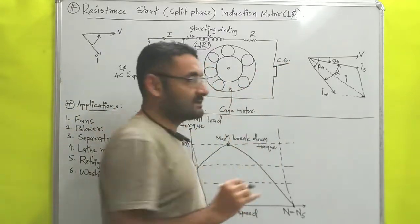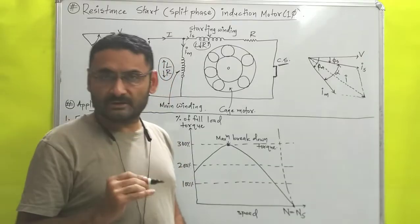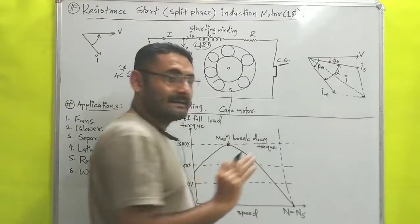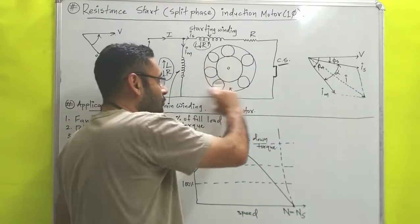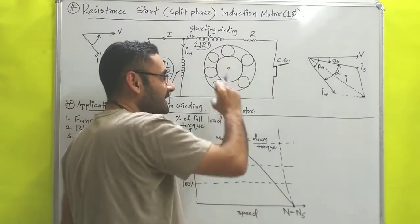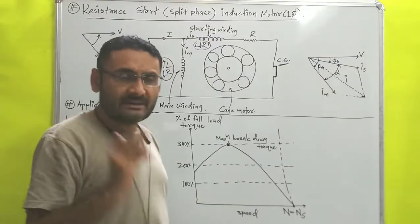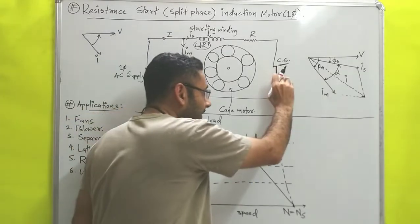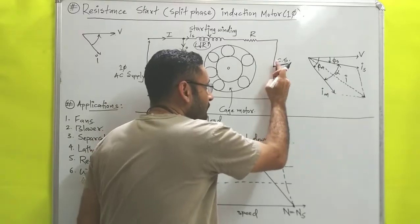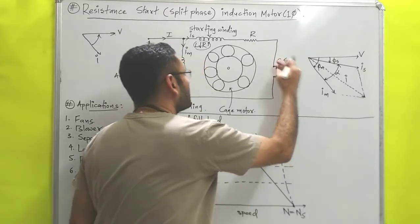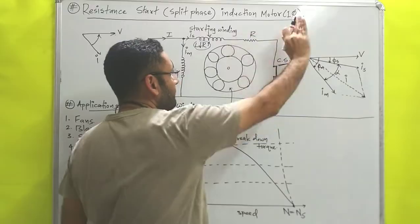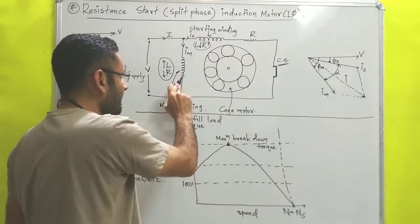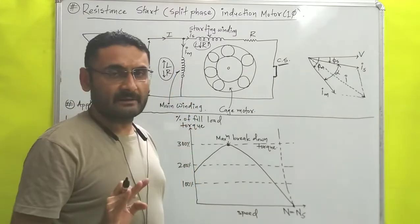This centrifugal switch is an automatic switch. Generally this switch is in the closed condition, and when the rotor starts to rotate and reaches 70 percent of its normal speed, the centrifugal switch will automatically open, so that the starting winding is separated from the main circuit and the rotor will continue its rotation with the help of the main winding.